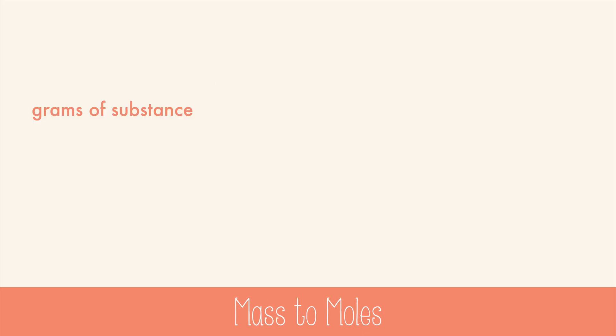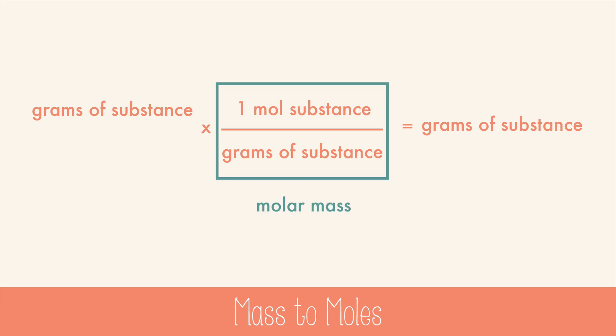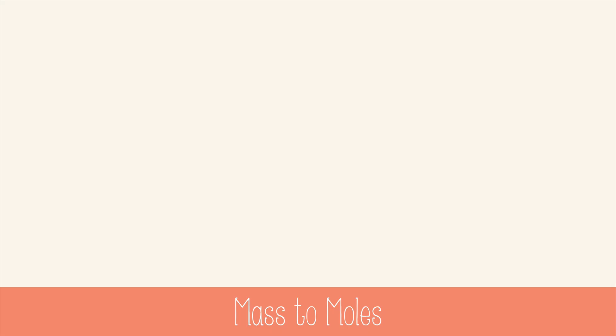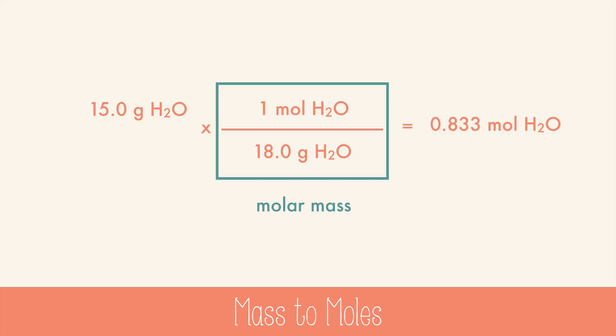To go from mass to moles, you again use molar mass. But this time, the grams are on the bottom and the moles are on top. Let's try it. If we start with 15 grams of water, we can use molar mass to change it into moles of water. Simply put the mass of water on the bottom, one mole on top, and then do the math to get 0.833 moles of water.